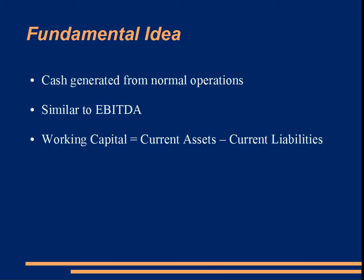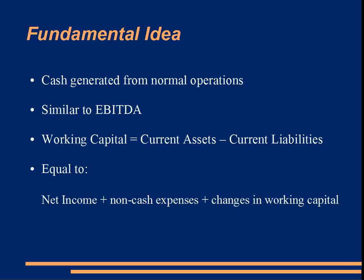The word 'current' simply means that it should be off the company's books within a year, so a current asset is something that is expected to be sold or consumed within one year. Now we can see the formula for operating cash flow: operating cash flow equals net income plus non-cash expenses — this is typically depreciation and amortization, the DA part of EBITDA — plus changes in working capital. So that's the fundamental formula for operating cash flow.